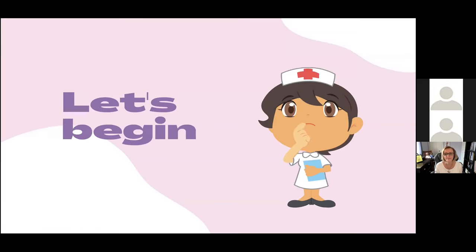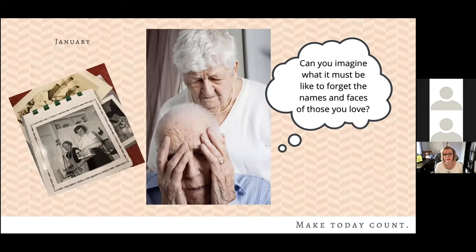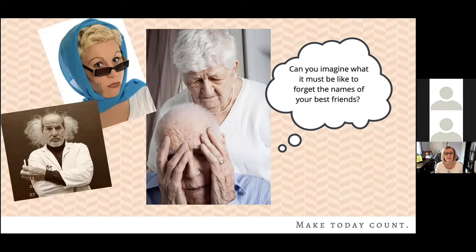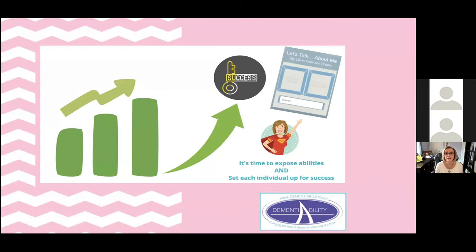Can you imagine what it must be like to fail in every conversation? To forget the names and faces of those you love? To forget the names of your best friends? To forget the things you have done and the places you have been? It's time to expose abilities and set each individual up for success. Let's make those scenarios a thing of the past. Let's get the information about a person's life into a book — a memory book — to help them reminisce and discuss the world they claim as their own.